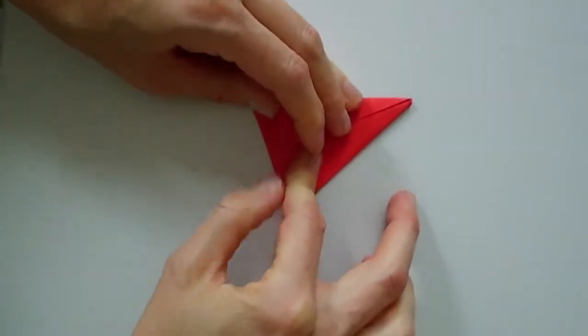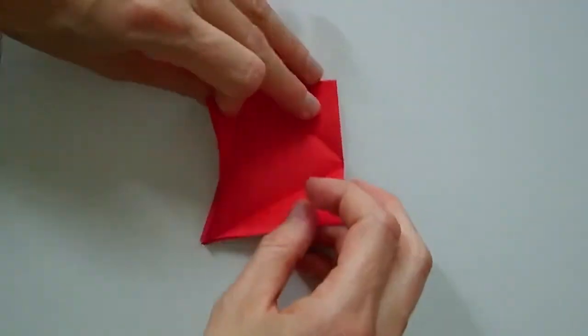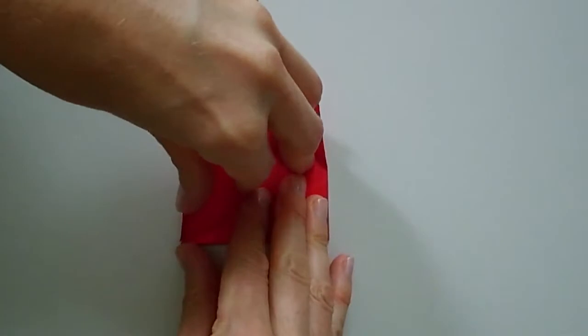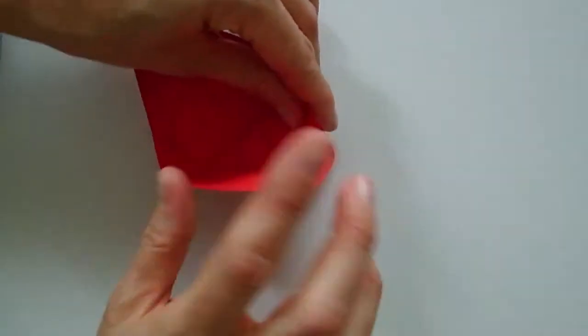You need to make this crease carefully. Now unfold those folds and take the top layer and fold it upwards along the fold we just made.